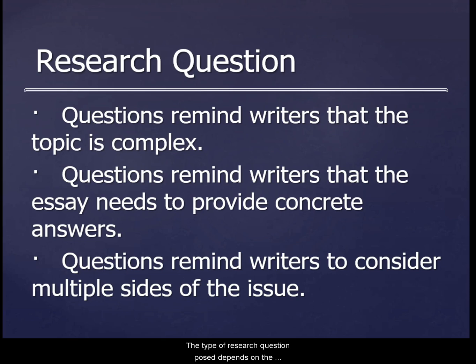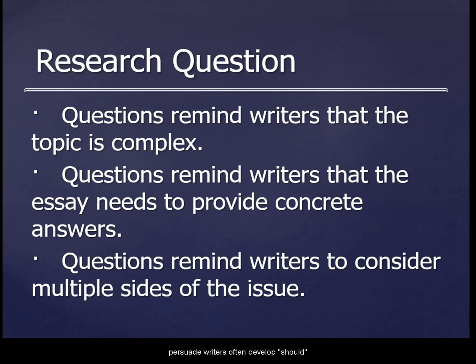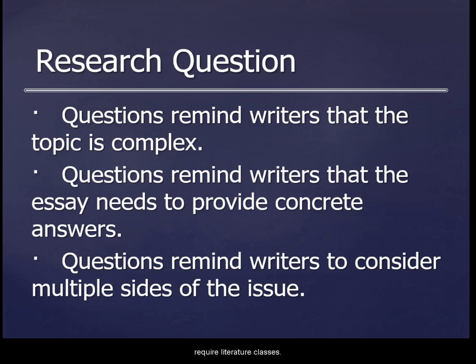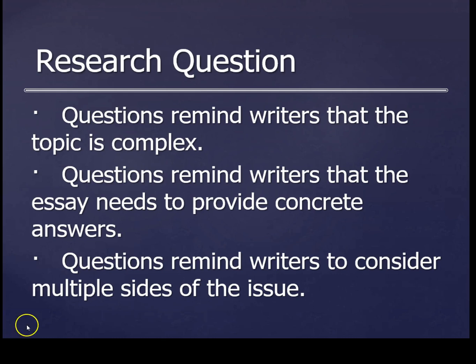The type of research question posed depends on the purpose of the research project. When writing research arguments intended to persuade, writers often develop should questions — for example, should public schools offer PE? Should public schools require literature classes? Starting with a traditional question can help writers formulate their research question, but writers don't need to limit themselves to these approaches. Developing a research question is a critical aspect of beginning your research project, and working with a writing center tutor and your instructor during the research process is really important. This is the end of your tutorial on research writing.